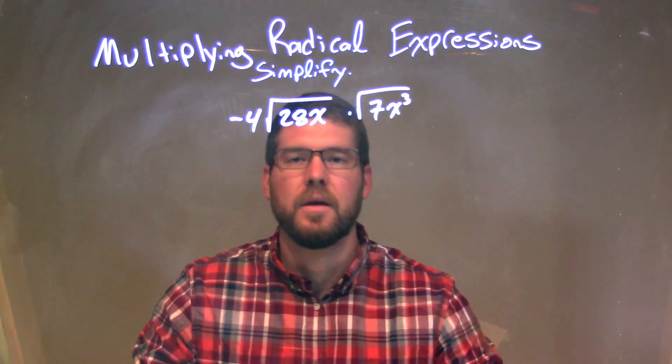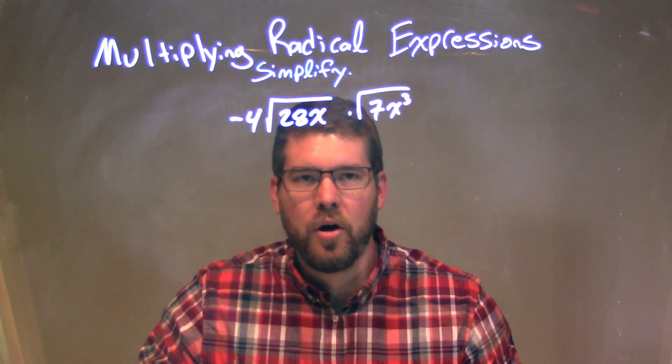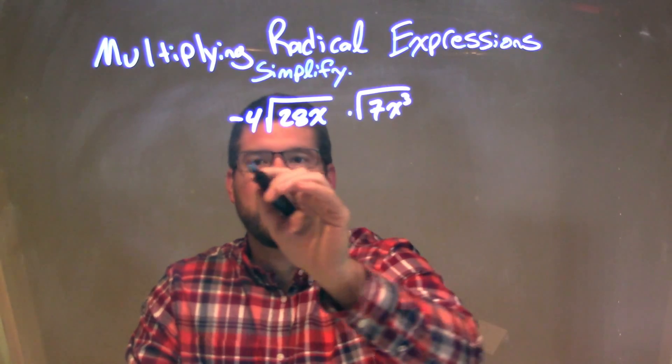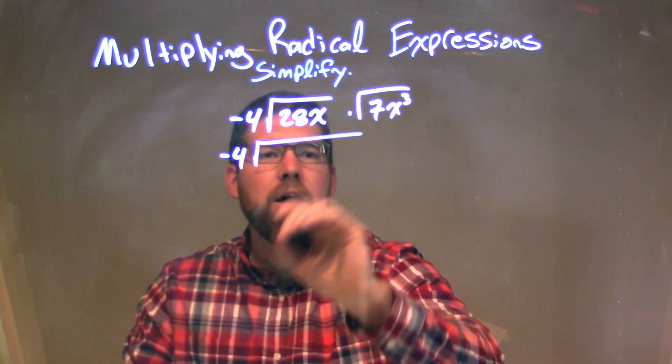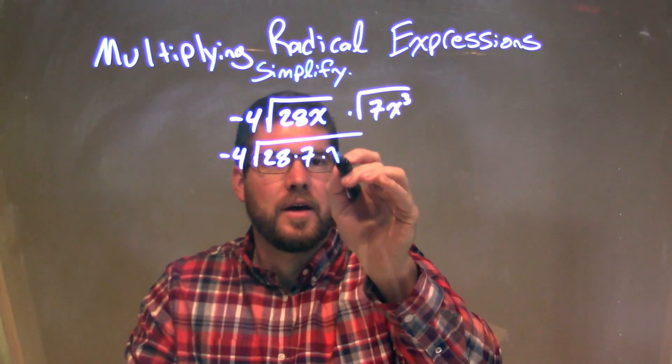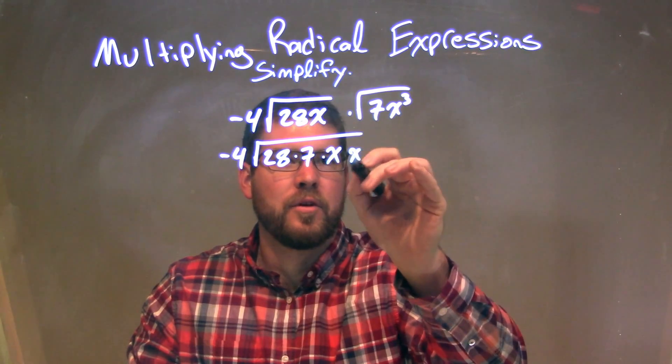So what I'm going to do is put this all under one big square root right there. Those two parts, I can combine together. So I'm going to put my numbers together, 28 times 7, and then that x comes down here, and that x to the third right there.